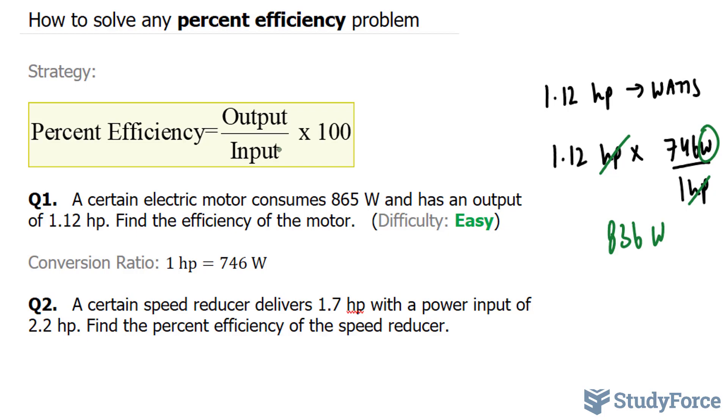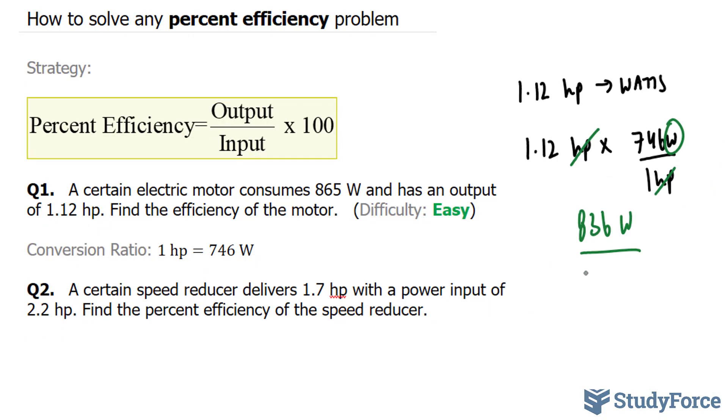The output is 836 divided by the input of 865 watts, multiplying that by 100. The two units cancel.